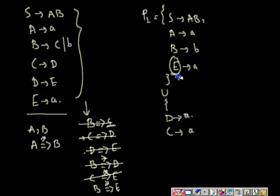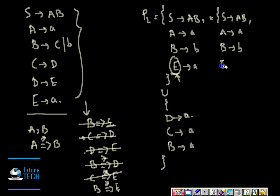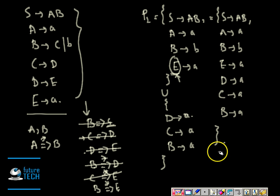B derives E — we have E here on the left-hand side, so B arrow A should be added. Finally, the complete set of production rules without any unit production is: S arrow AB, A arrow A, B arrow B, E arrow A, D arrow A, C arrow A, and B arrow A. This is the final set of production rules without any unit production. Thank you.